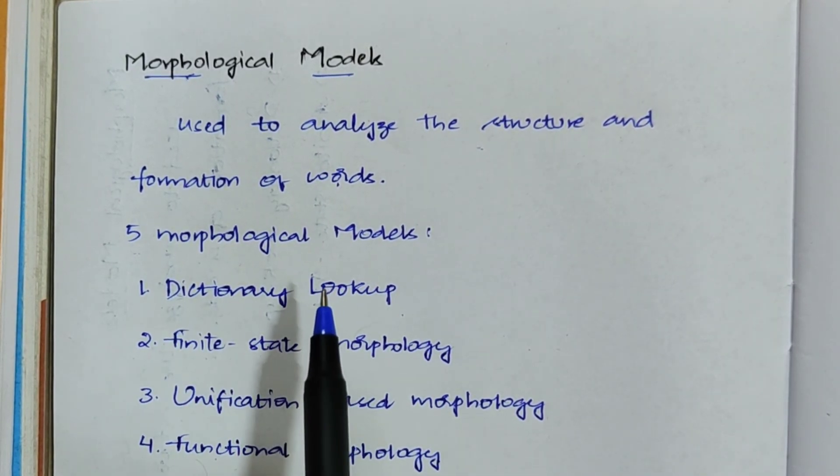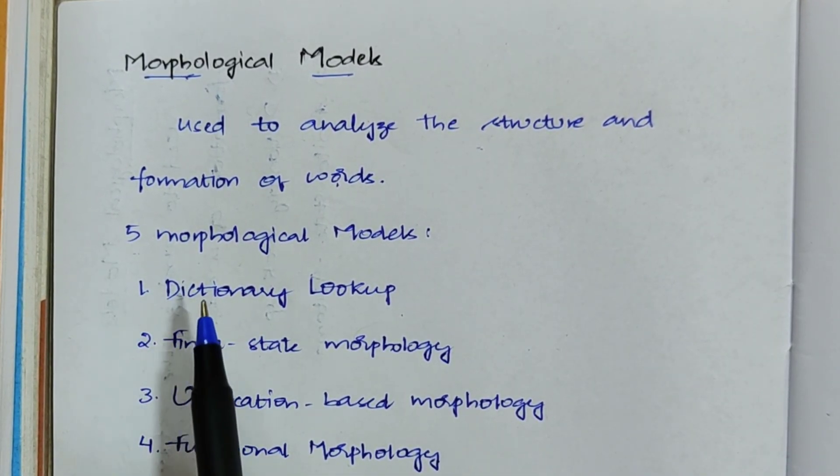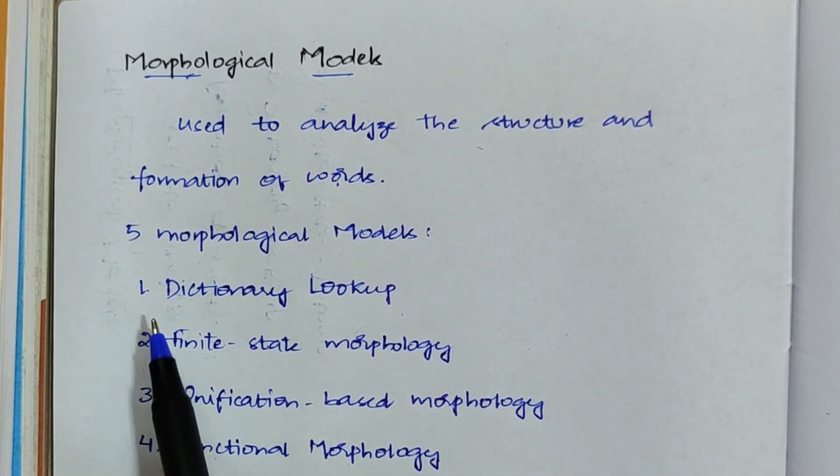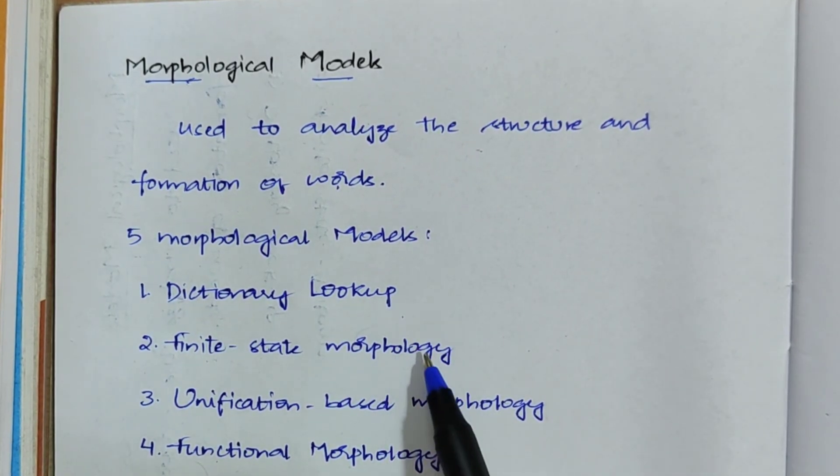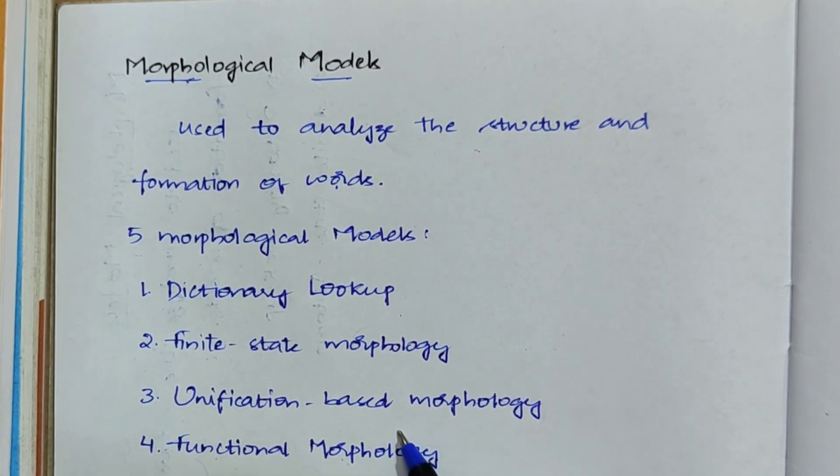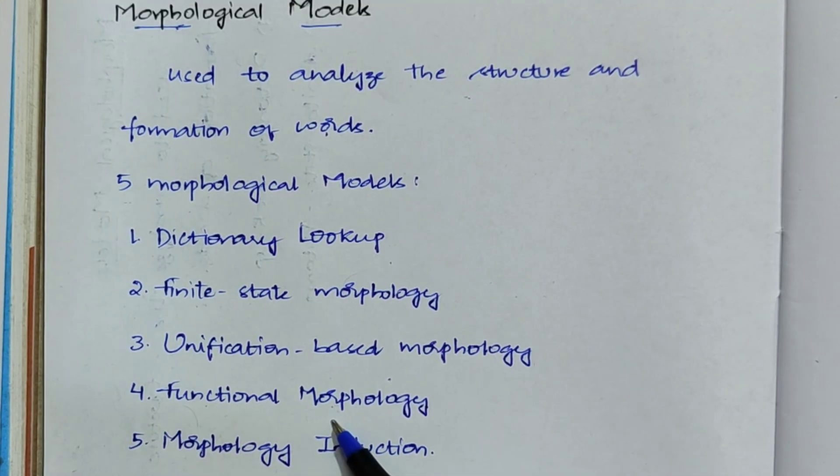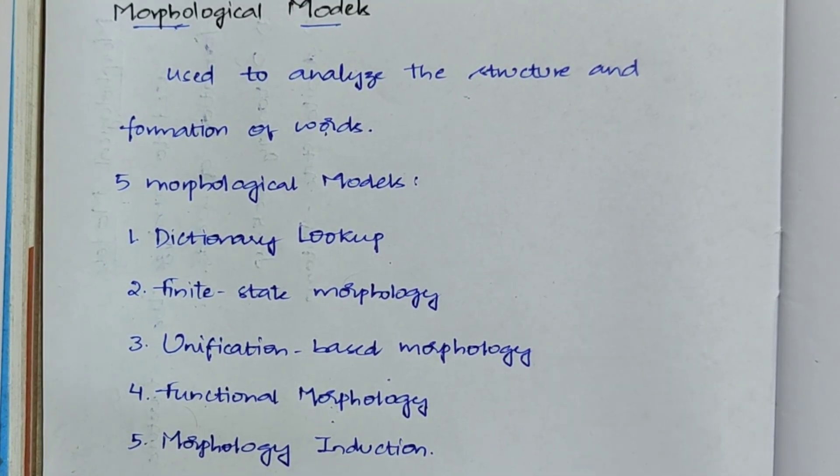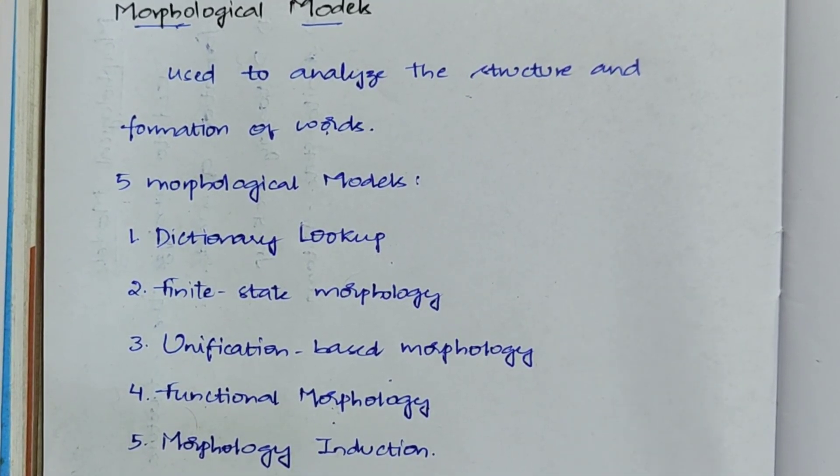These morphological models are of five types. First is dictionary lookup, second is finite state morphology, third is unification-based morphology, fourth is functional morphology, and fifth is morphology induction.